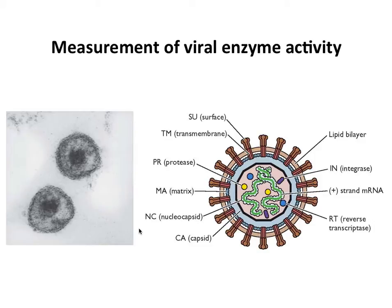Another way to measure virus particles — not infectious virus — is to measure enzymes within the particle. The HA assay does not measure infectious virus, but simply viruses attaching to red blood cells. Many viruses have enzymes in their particles, and many have nucleic acid polymerases which can be readily assayed.